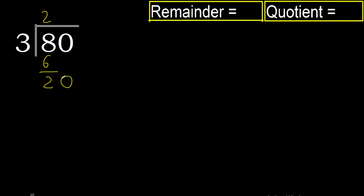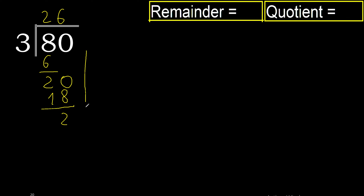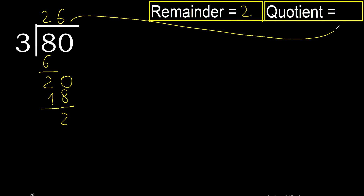Now with 20. 3 multiplied by 7 is 21 — no. 3 multiplied by 6 is 18 — yes. 20 minus 18 is 2. There is no number that goes down, therefore finish. Therefore the answer to the question is 26.